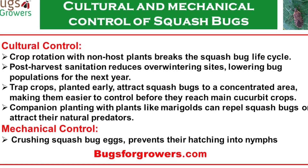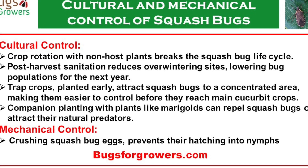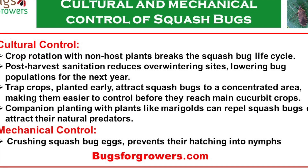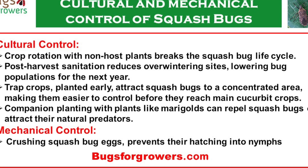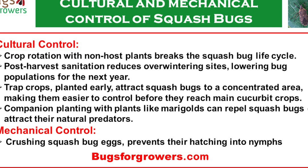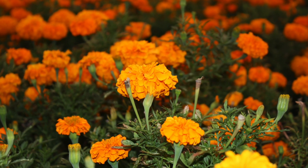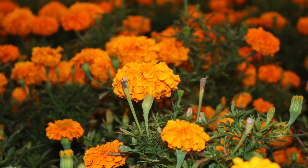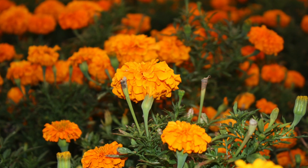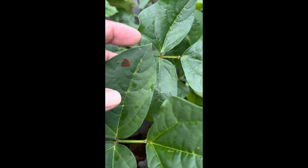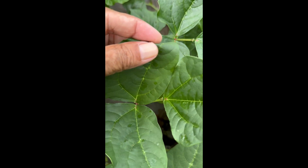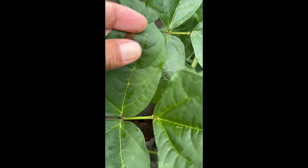When trap crops are planted early in the season, they attract squash bugs to a concentrated area, making them easier to control. Planting companion plants such as marigolds can repel squash bugs or attract their natural enemies, helping to reduce squash bug populations.